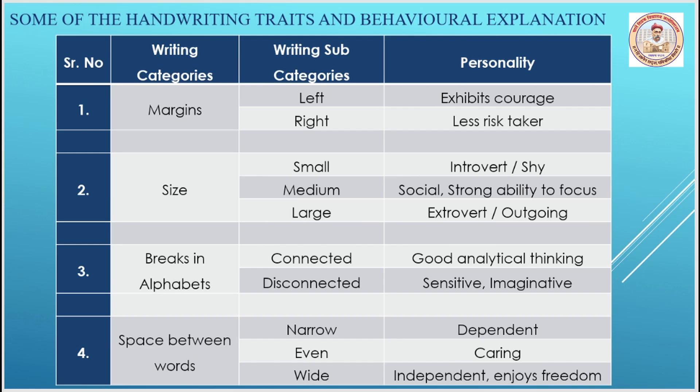If there are breaks in the alphabet — that is, if alphabets are very much connected — then the person has good analytical thinking. If they are disconnected, then the person is very sensitive. If the space between words is narrow, then the person is very dependent. If it is even, then the person is caring.